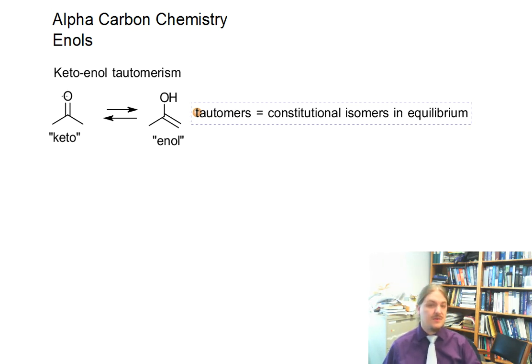Generally the two tautomers are called the keto tautomer and the enol tautomer, even though some of the things over here aren't actually ketones or aldehydes and other carbonyl compounds. But we generally call this one the keto tautomer and the other one the enol tautomer. This can either work in acid or in base, and I'm going to talk about both versions briefly.